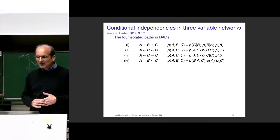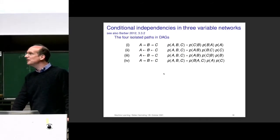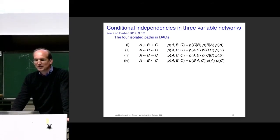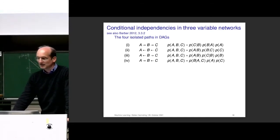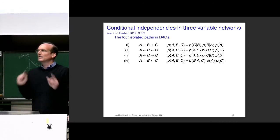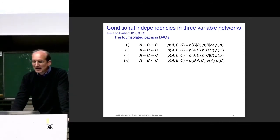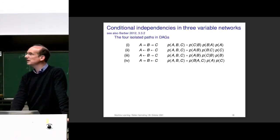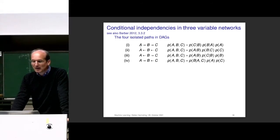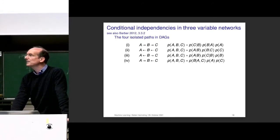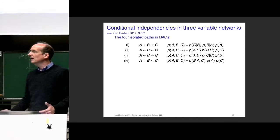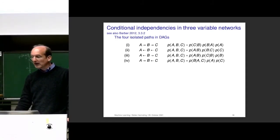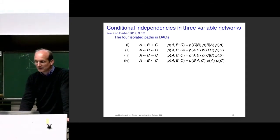We look at the simplest interesting paths: three variables with all combinations — arrows all going right, all going left, going outward (fork), and both going in (V-structure). Each corresponds to a different factorization. Assuming this graph tells me there is no arrow going from A to C, so I can omit A in the conditioning of C given B, A — which follows from the product rule, but given the network I can omit it here.